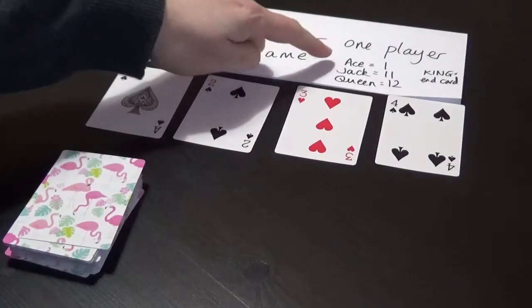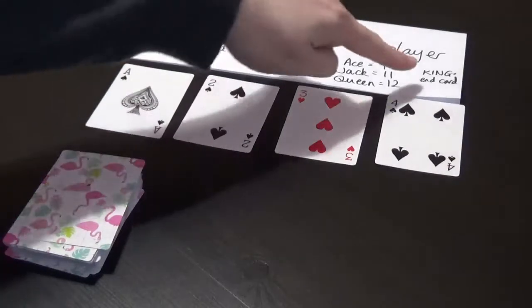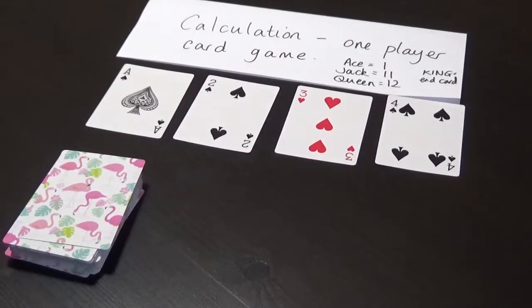For this game, Aces count as 1, Jacks as 11, Queens as 12 and King is your end card. It has no value. So you need a standard pack of playing cards.